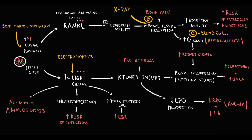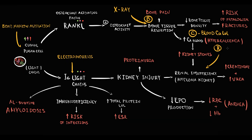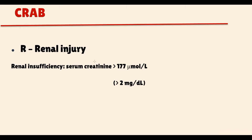Hypercalcemia and monoclonal light chains of immunoglobulins can cause severe damage to renal tissue, leading to renal insufficiency. Renal insufficiency can be measured by blood creatinine level, and serum creatinine higher than 177 μmol/L fulfills the R criteria.